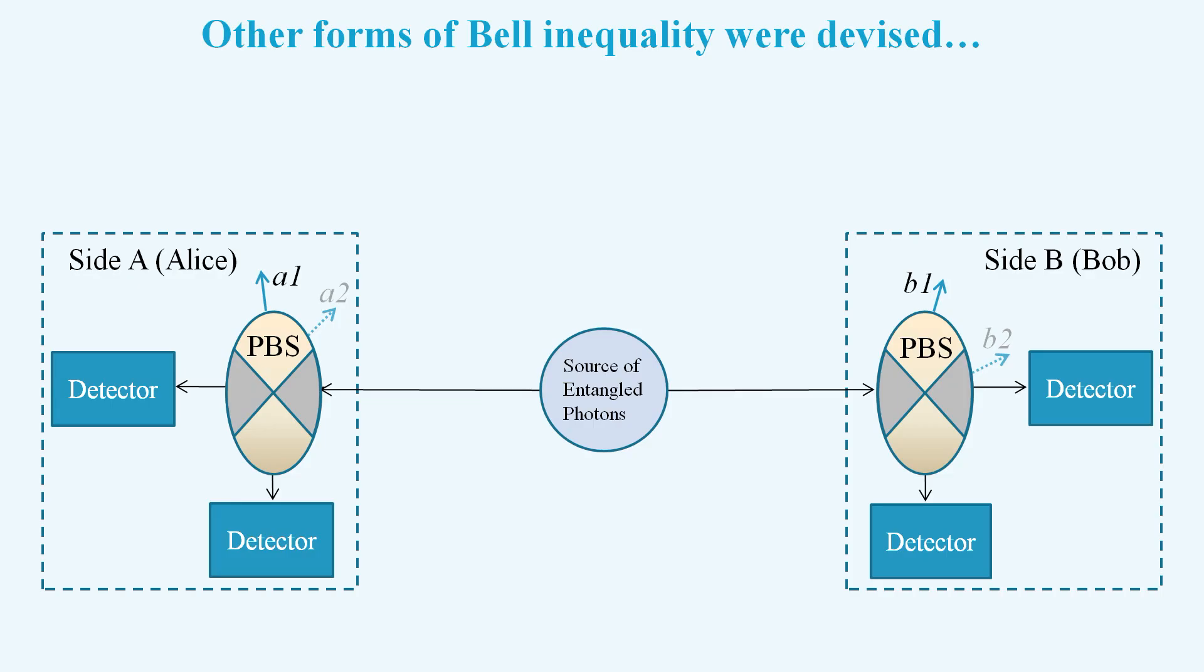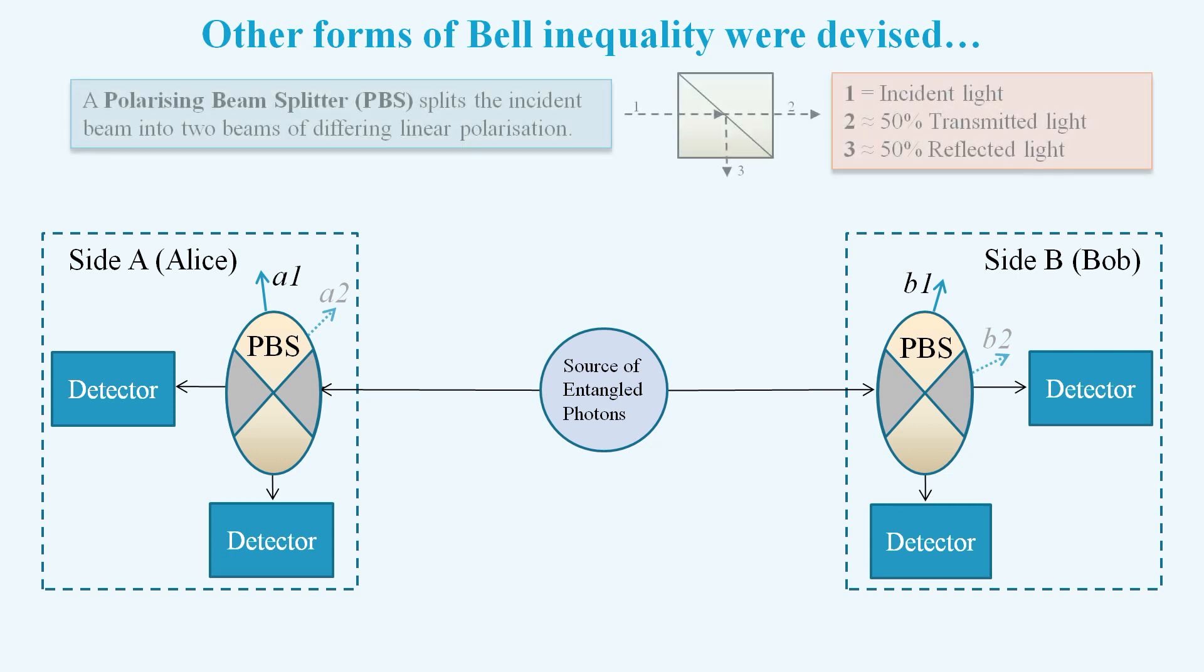Now let's sketch out an experiment where we can select between two angles at each side. We could use a polarising beam splitter on each side, so that a photon passing straight through can be thought of as heads, and a reflected photon can be thought of as tails.